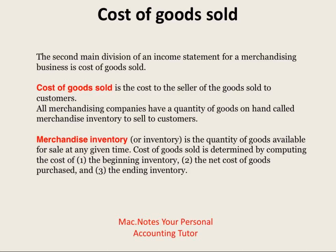The second main division of an income statement for a merchandise business is the cost of goods sold statement. The cost of goods sold is the cost to the seller of the goods sold to customers. All merchandise companies have goods on hand, and they call the goods on hand merchandise inventory, regardless of what the merchandise is — clothes, food, electronics — it's all merchandise inventory. That is the quantity of goods available for sale to customers at any time.